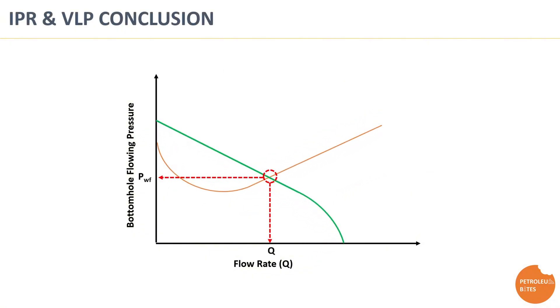In conclusion, both the inflow performance relationship and vertical lift performance are critical tools for optimizing well production. While IPR tells us how much fluid the reservoir can provide, the VLP helps us understand the pressure needed to lift that fluid to surface. By analyzing these two curves together, engineers can make informed decisions to maximize efficiency, reduce costs, and ensure long term well productivity.